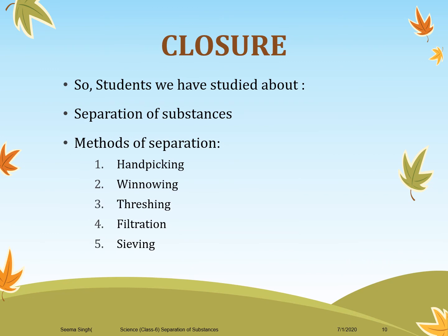That's all for today. Let's do a quick recap of what we have learnt. We learnt about the separation of substances — what it means and how we define it. It is the process by which we separate one substance from another in a mixture. We also studied the various methods of separation: hand picking, winnowing, threshing, filtration and sieving. All these processes are majorly manual in nature and we can find examples of them around us in our daily life.